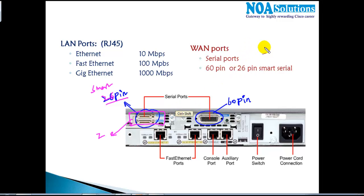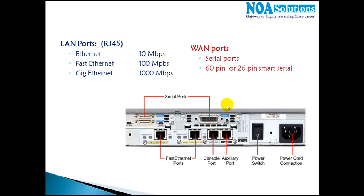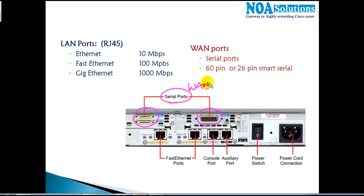You'll find interface cards such as the one-port (1T) card, two-port serial card, and also 4-port or 8-port variants. We'll get into all these modules when we start adding modules. Whenever you see serial ports, understand that these are your WAN ports used for WAN connections, and the number of ports depends on the different router models.